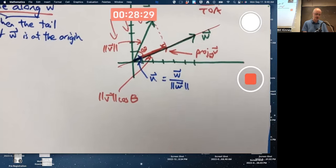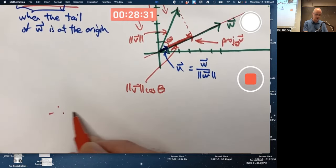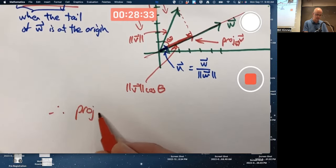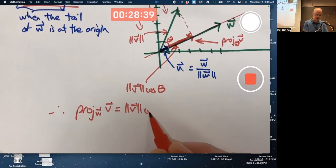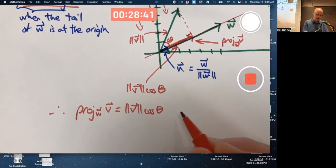So, the projection vector, therefore, the projection vector could be thought of as the length of V times the cosine of the angle times the vector W over its magnitude.